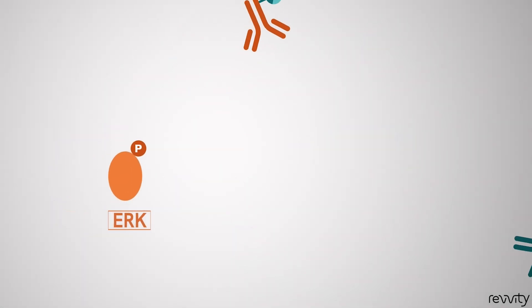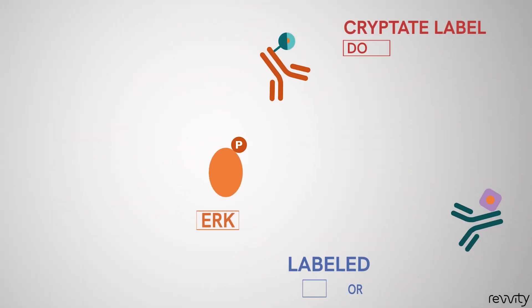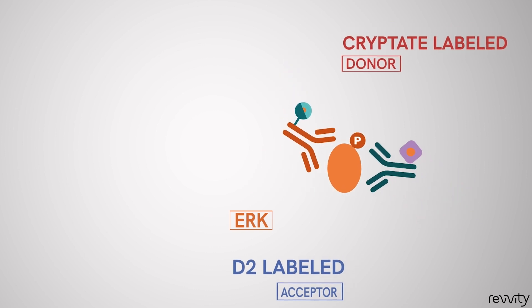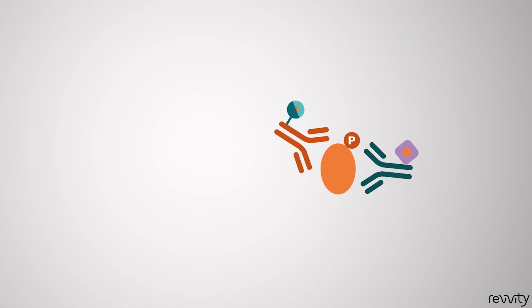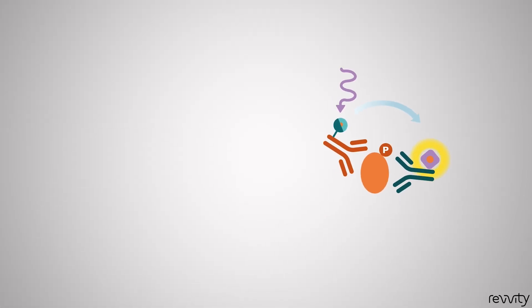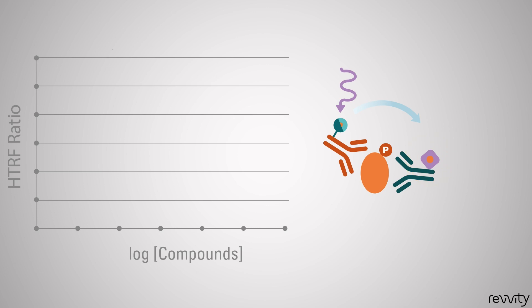How does it work? Phospho-ERK is detected by a sandwich assay using two different specific antibodies, one labeled with donor and the second with acceptor. When both antibodies are linked to phospho-ERK, the specific signal is emitted. Signal intensity is proportional to the amount of phosphorylated ERK in the sample.